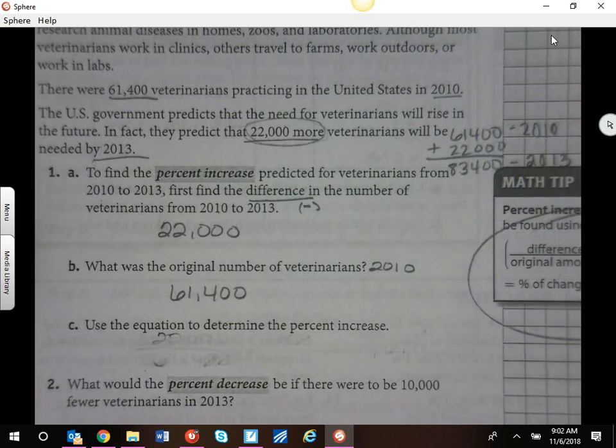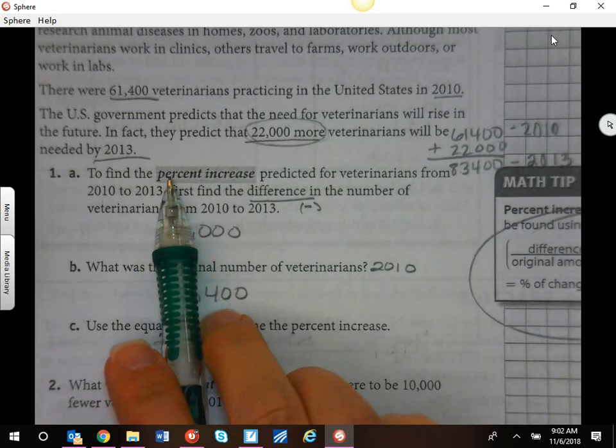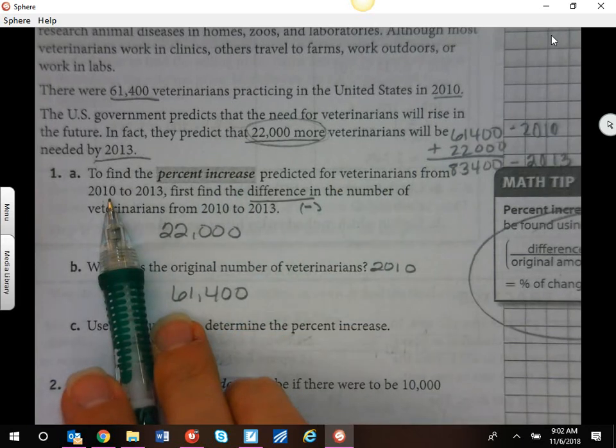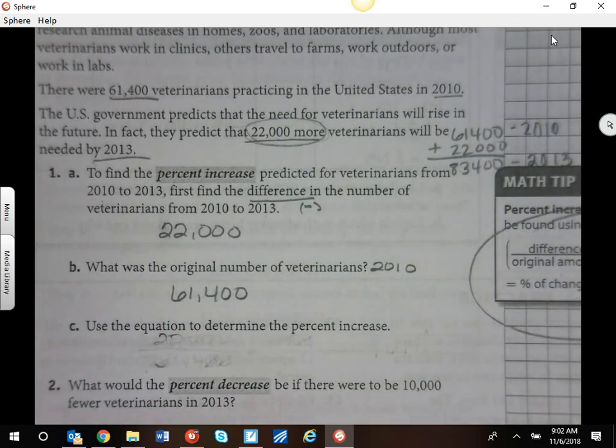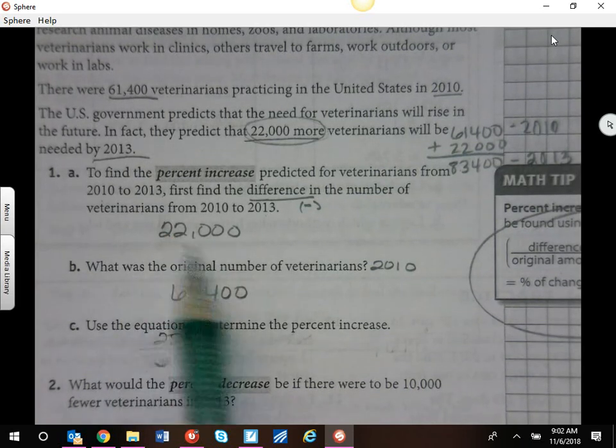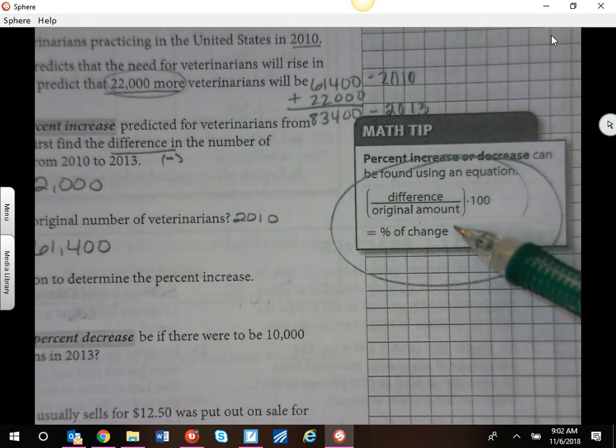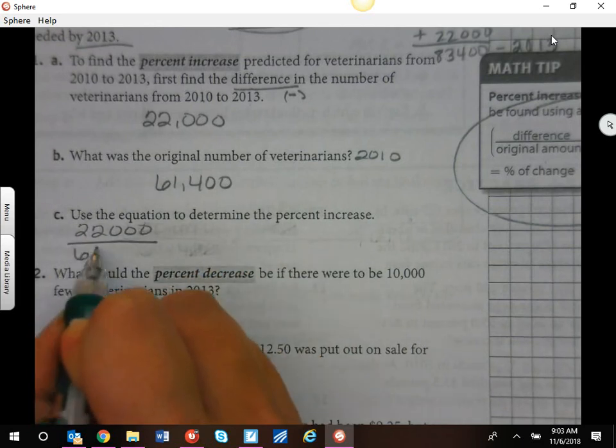If we're going to find out how much that increased as a percentage, not as an actual number, we need to look at the difference from 2010 to 2013. That would normally be a subtraction, but because they gave us 22,000 more, that is our actual difference. The original number is what we had in 2010. We'll apply this percent increase equation to find out how much it went up as a percentage. In order to do this, we're going to write our difference, 22,000 over 61,400.